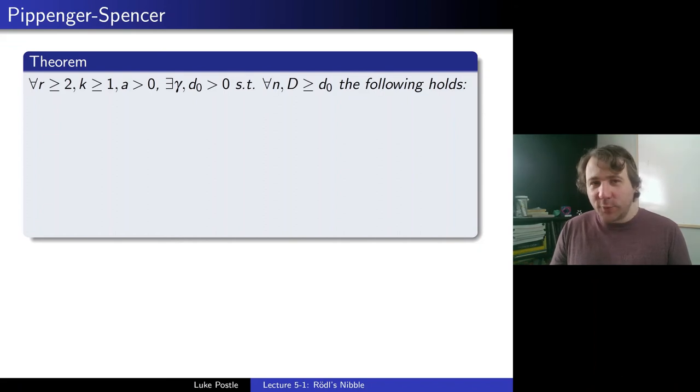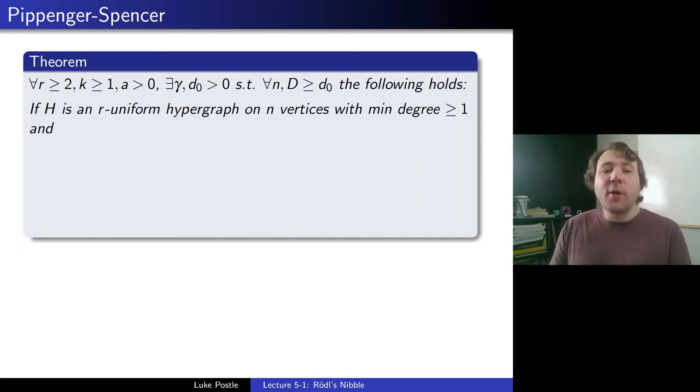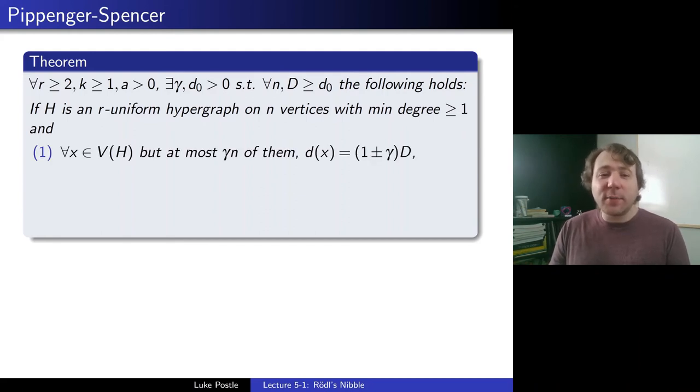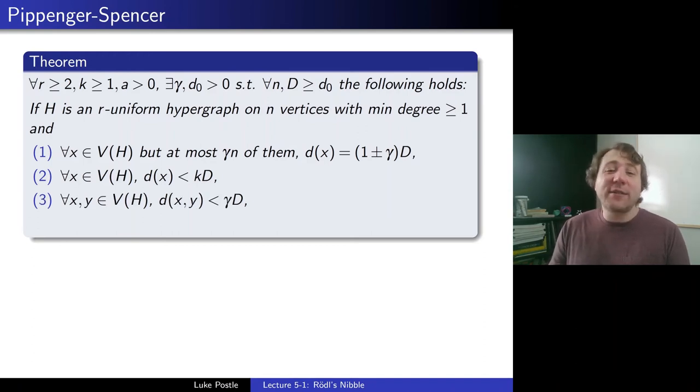So that's Pippenger and Spencer's theorem. We won't do the coloring version, but we will look at the just finding one cover version. So here's the formal statement of that. For every r≥2, k≥1, and α>0, quite a mouthful, there exist a γ and a d₀, both greater than 0, such that for every n and d, which d will be at least d₀, the following holds. So what do all those numbers mean? Well, we're going to say if H is an r-uniform hypergraph, so r will be the uniformity on n vertices, so n will be this number of vertices with minimum degree at least one, and for every x in V(H), but at most γn of them, d(x) is equal to (1±γ)d, and for every x in V(H), d(x) is less than kd.